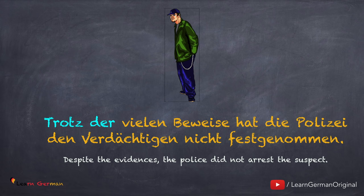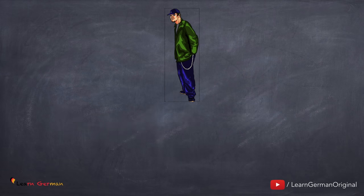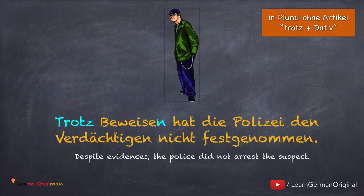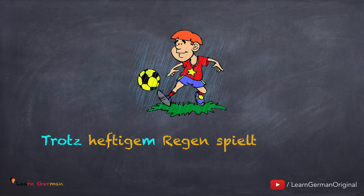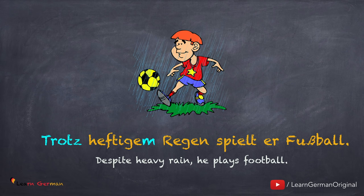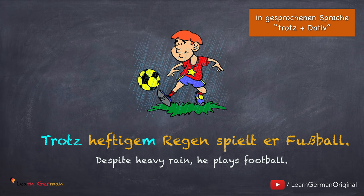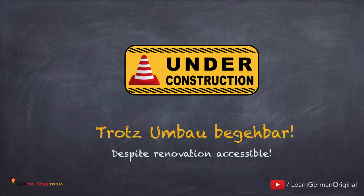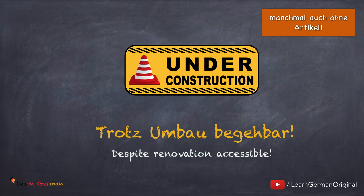Trotz der vielen Beweise hat die Polizei den Verdächtigen nicht festgenommen. Weil wir hier den Artikel haben, benutzt man mit 'Trotz' Genitiv. Aber wenn es keinen Artikel gibt, dann benutzt man mit 'Trotz' die Pluralendung: Trotz Beweisen hat die Polizei den Verdächtigen nicht festgenommen. Auch in der gesprochenen Sprache kann man mit 'Trotz' Dativ benutzen — zum Beispiel: Trotz heftigem Regen spielt er Fußball. 'Trotz' kann man auch ohne Artikel benutzen, aber sehr selten: Trotz Umbau begehbar — in diesem Fall kein Artikel und keine Genitivendung.